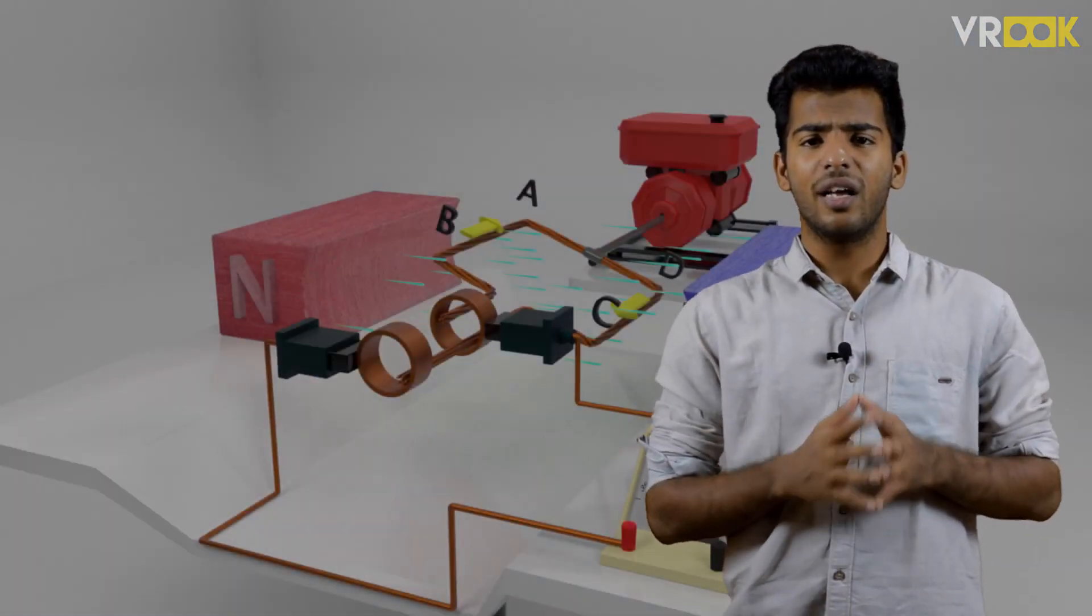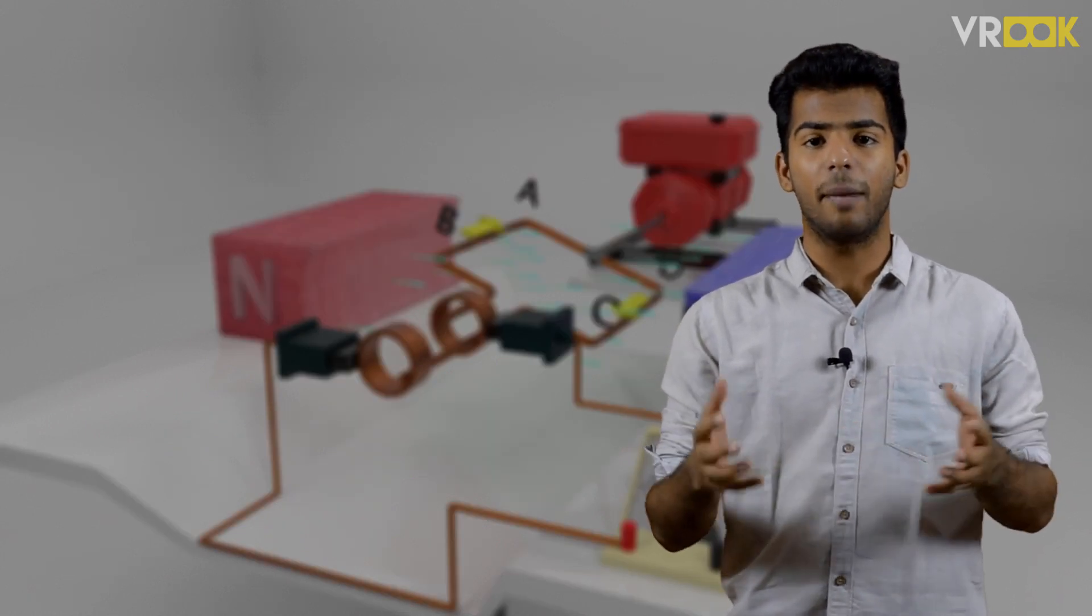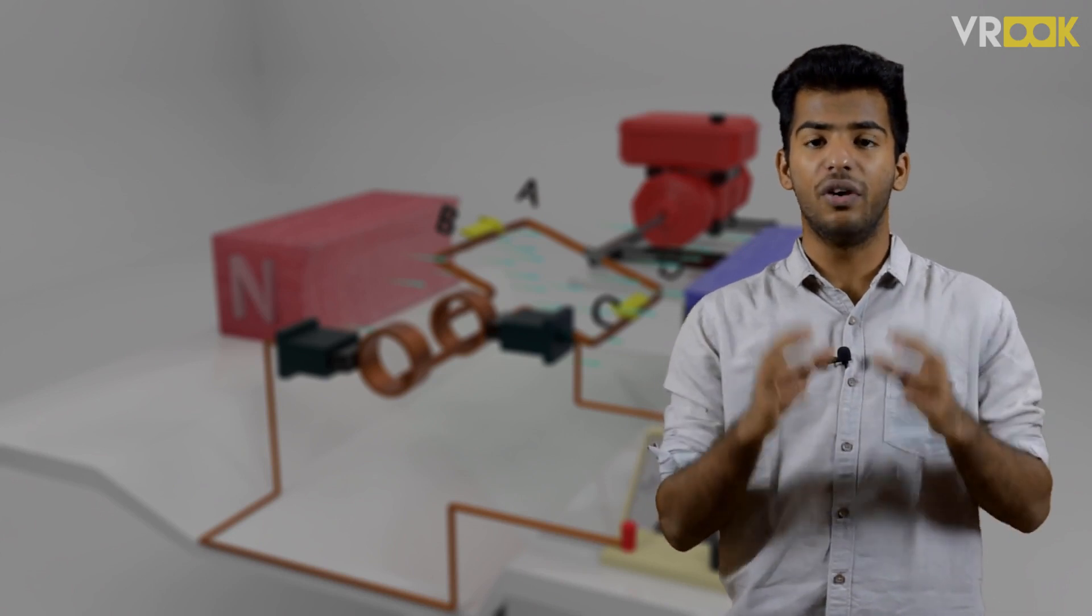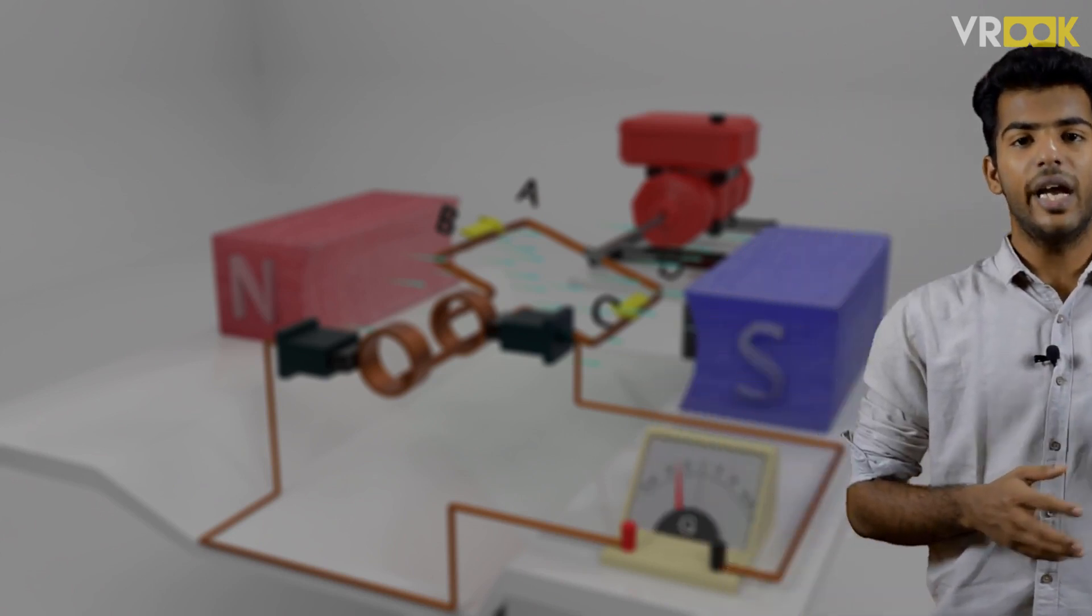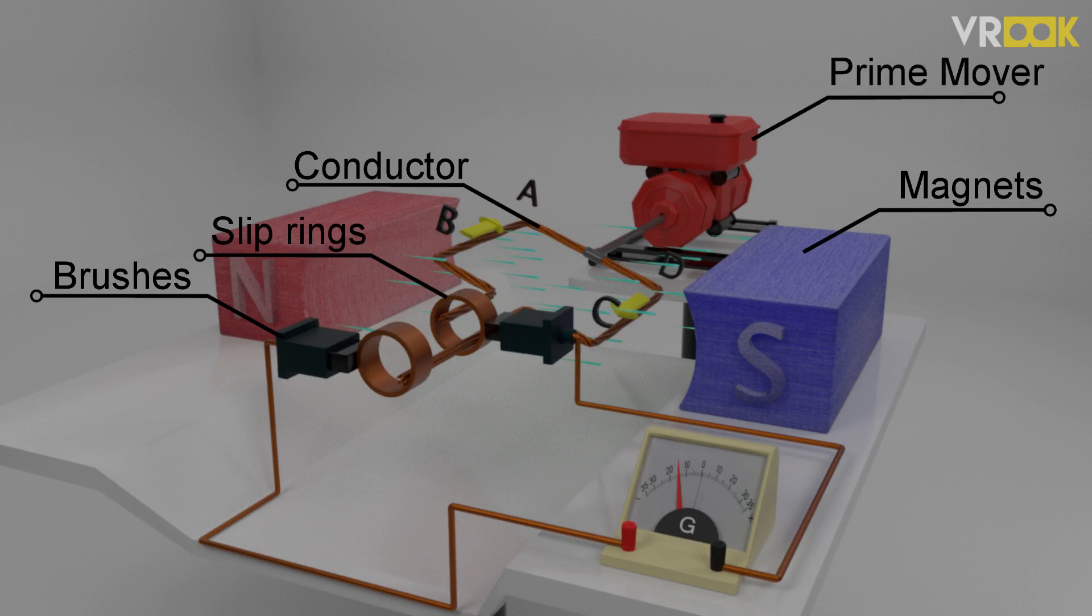The construction part is very similar to DC machines which you would learn in the upcoming modules. But for now, let's focus on the working part. It consists of two magnets, a conductor loop, slip rings, brushes and a prime mover like a diesel engine.